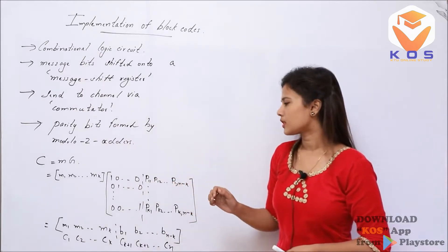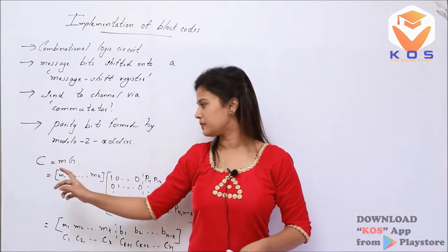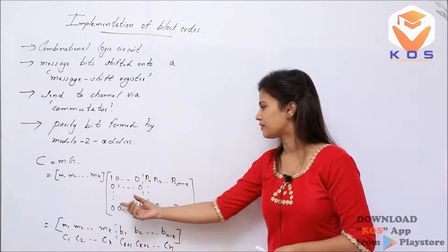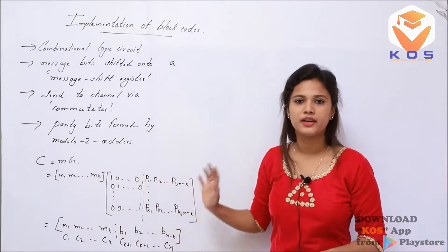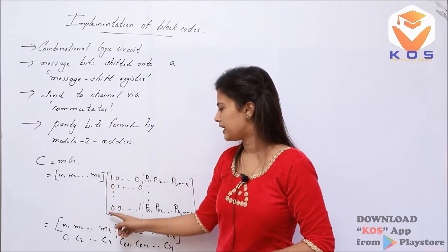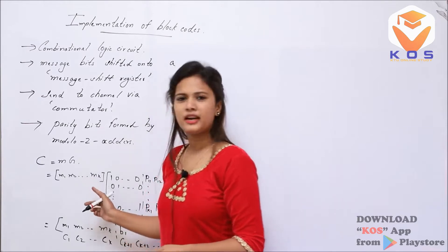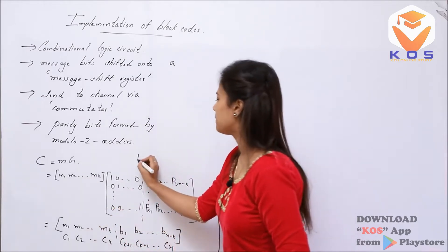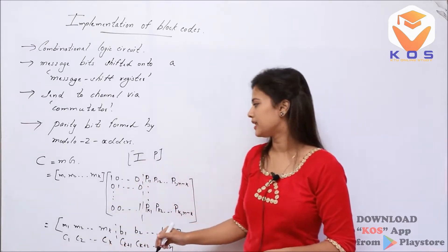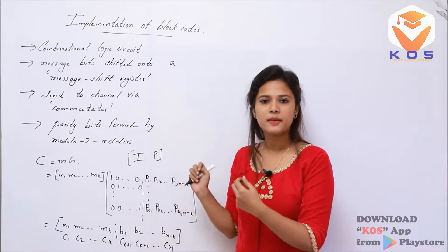For example, if we create a code, we will multiply the messages and the generator matrix. We have the messages and the generator matrix in expanded view. The first row, first column is multiplied. The second column is parity.